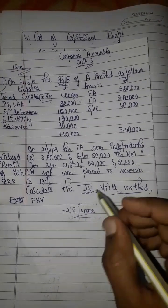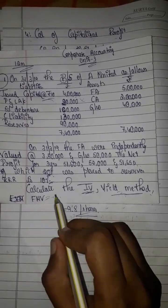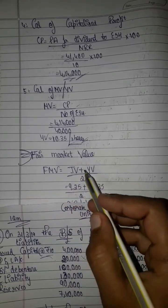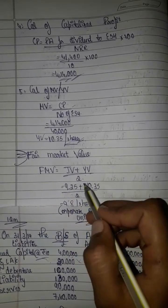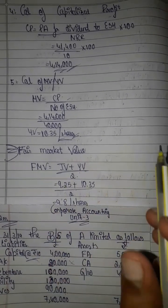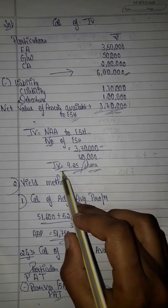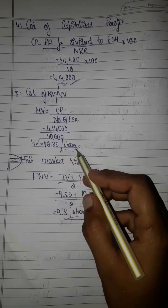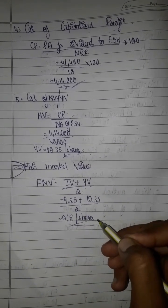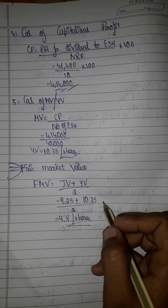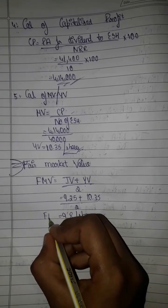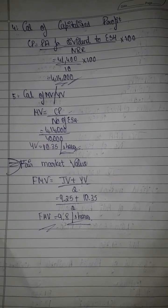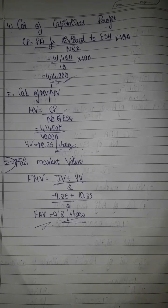The last method is fair market value, which equals intrinsic value (IV) plus yield value (YV) divided by 2. IV is 9.25 per share, YV is 10.35 per share; so fair market value equals 9.25 plus 10.35 divided by 2, which equals 9.80 per share. This completes the sum from Chapter 3. Thank you guys, thanks for watching.